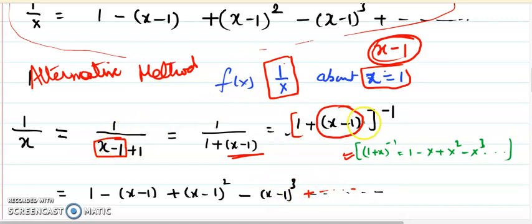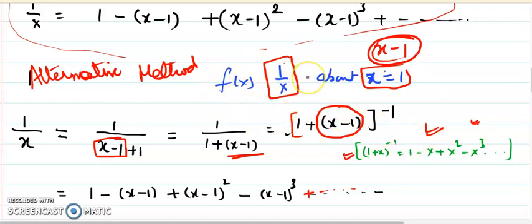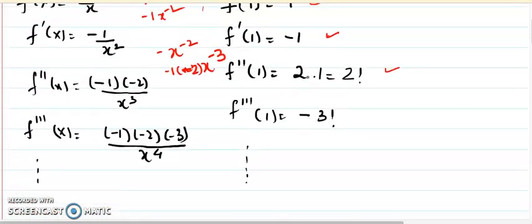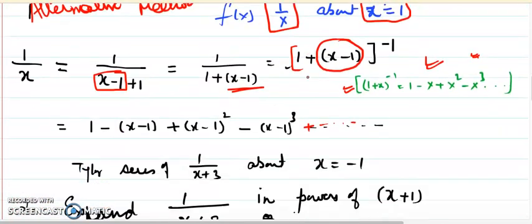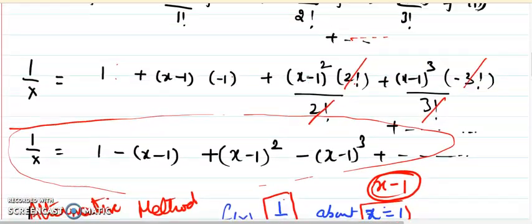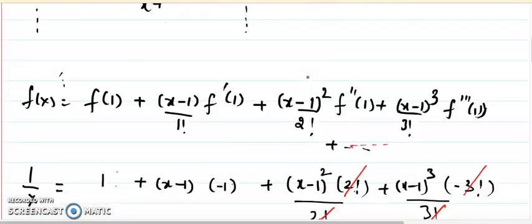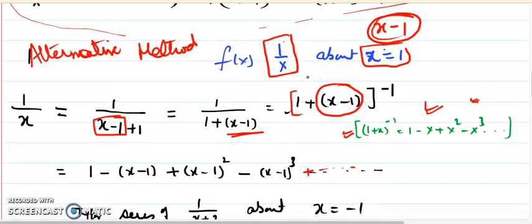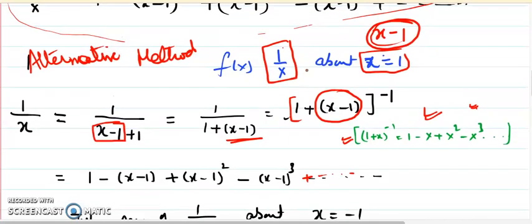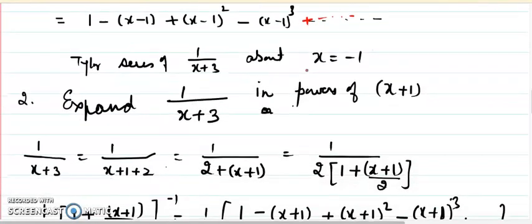This way, using the binomial series formula, we can expand the function without solving for every derivative and then substituting into the formula. This can be derived from the Maclaurin series about x equals 0. The key benefit is saving time — if you are comfortable with this formula you can continue with it, otherwise the definition method is always available.